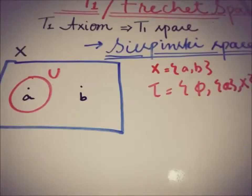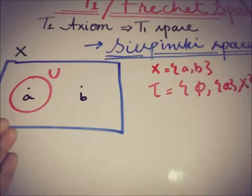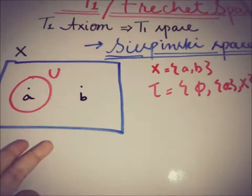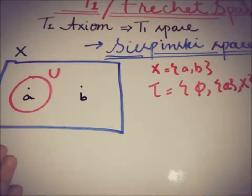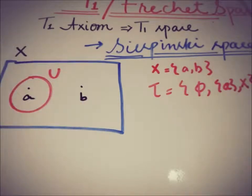The Sierpinski space has X containing points A and B, and the topology contains the empty set, the set {A}, and the set X. We only have one open set containing A and another open set containing both A and B. So every open set which contains B also contains A, because only the set X contains B — and it contains A as well. The condition for T1 requires open sets U and V such that A belongs to U, B belongs to V, A does not belong to V, and B does not belong to U. This condition is not fulfilled here, confirming that every T0 space is not necessarily a T1 space.